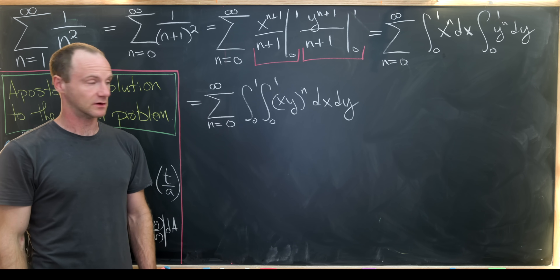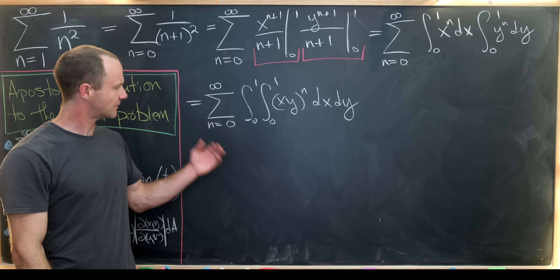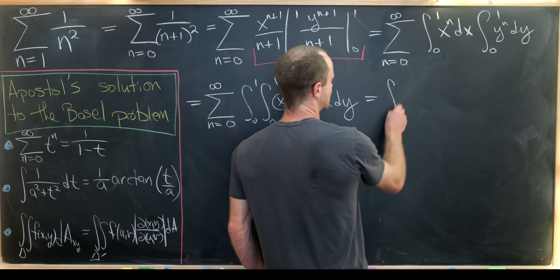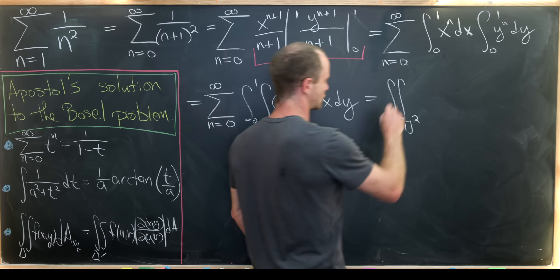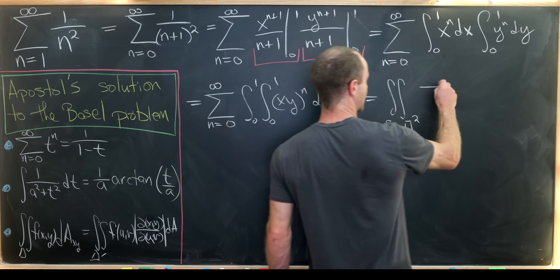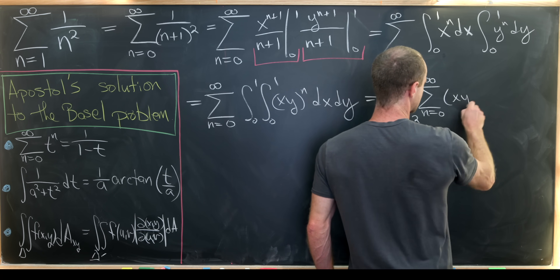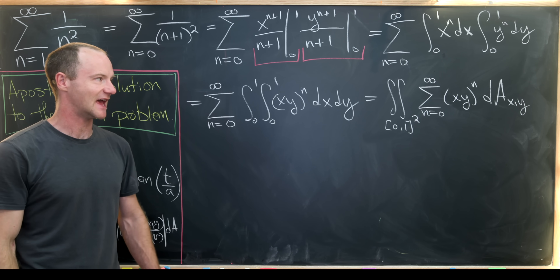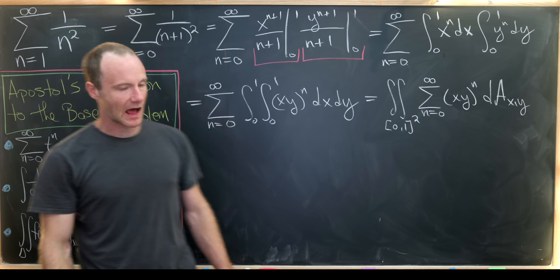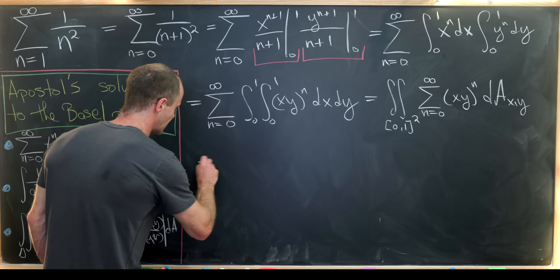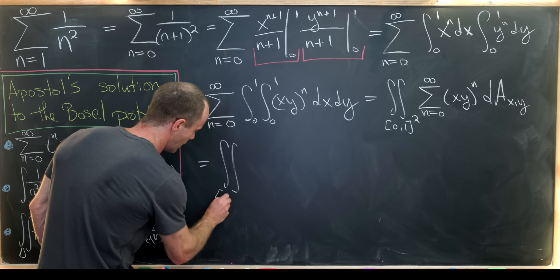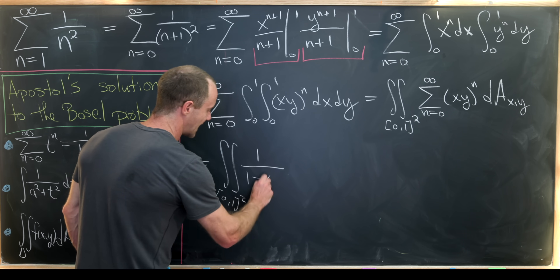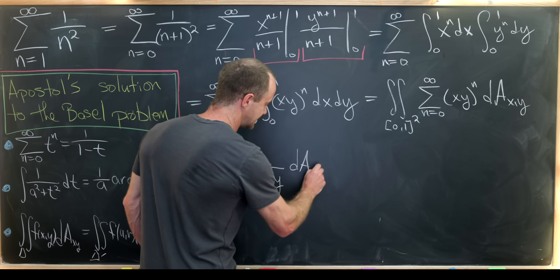This is an iterated integral, and I want to change it to a double integral while exchanging the order of summation and integration. That gives me the double integral over the unit square of the sum as n goes from 0 to infinity of (xy) to the n, with differential area component dA in the xy plane. Applying the geometric series rule, this becomes the double integral over the unit square of 1 over (1 minus xy), dA.